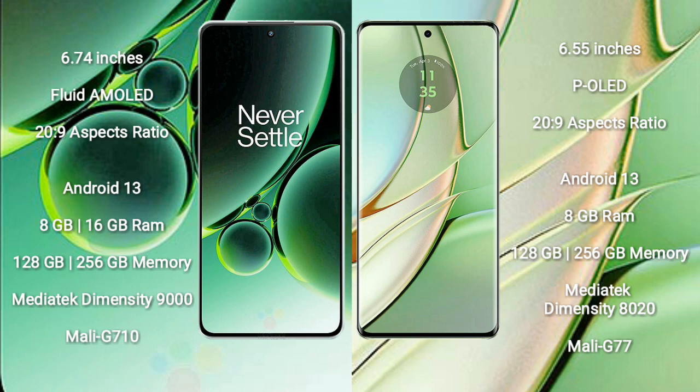OnePlus Nord 3 runs on the Android 13 operating system. Motorola Edge 40 also runs on Android 13. OnePlus Nord 3 comes with 8GB and 16GB RAM options, and 128GB and 256GB internal storage.